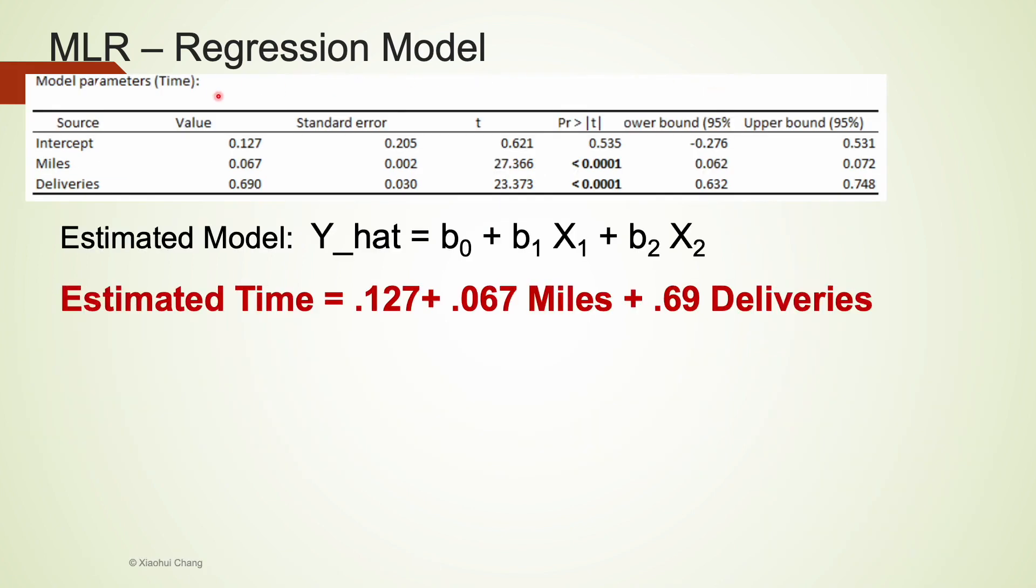From the coefficient table, we can write out the estimated linear regression equation. Estimated time equals 0.127 plus 0.067 multiplied by miles plus 0.69 multiplied by number of deliveries. We are more interested in the slope coefficients, as they represent the effect of each x on y.